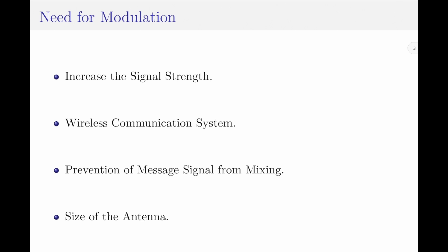The next important question to answer is: what is the need for modulation? There are a large number of reasons that support the need for modulation, and in this slide I have listed four of them. The first one is increasing the signal strength. The information bearing signals that are transmitted are not capable of direct transmission because of their weak strength. By performing modulation, the strength of the message signal can be increased so that it can travel longer distances.